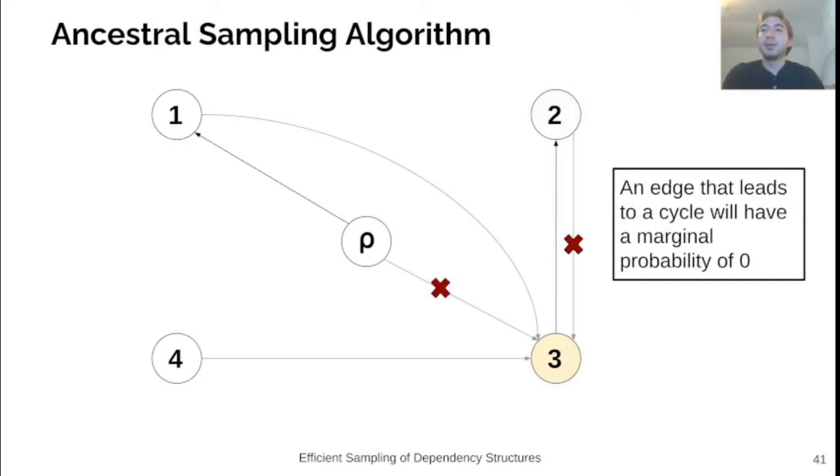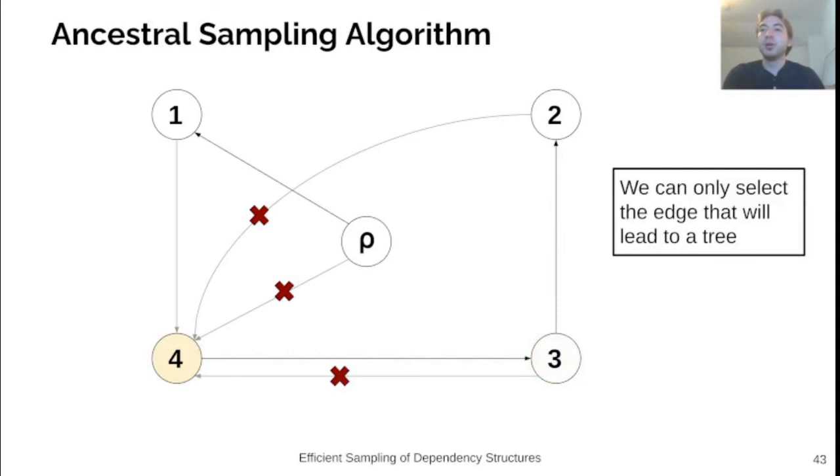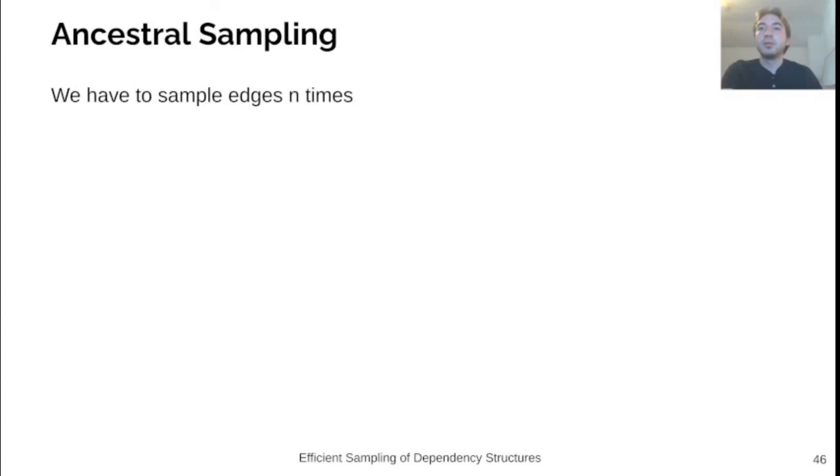Similarly, when we want to sample an edge into node 3, we will have zero probability for the edge root to node 3. We will also have zero probability for the edge 2 to 3, as this would lead to a cycle which is not allowed in the tree. When we sample an incoming edge to node 4, we can only ever select the edge from 1 to 4, as the others would either violate the root constraint or lead to a cycle.